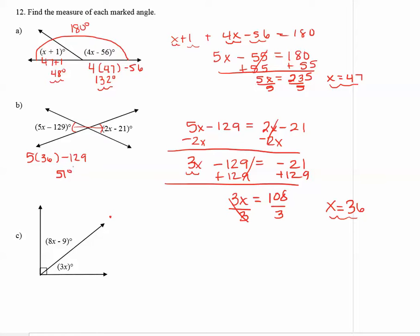Now I should get 51 degrees again. This is a good way to check your answer. The other expression is 2x minus 21, so 2 times 36 minus 21. This also equals 51. So this verifies that my solution for x is correct.